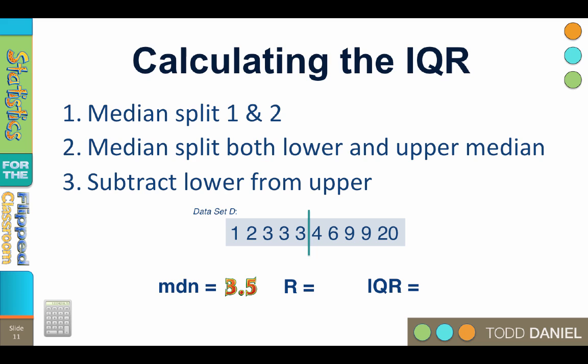Next, you do two more median splits, one for the lower half, and another for the upper half. Finally, you subtract the lower median split from the upper. 9 minus 3 equals 6.